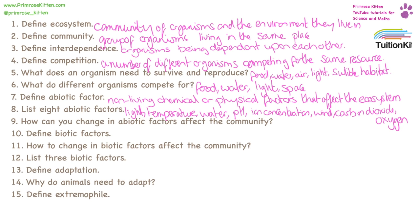A change in abiotic factors can have a drastic effect on a community. If you change the temperature, it could be too hot or too cold for an organism to survive. If you remove water, animals might not be able to drink enough and thus die. Or if you increase the water levels, there might be flooding. So it can have a drastic, dramatic, wide-ranging effect on a community.